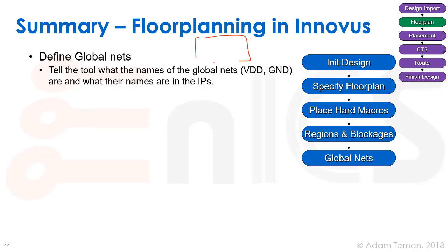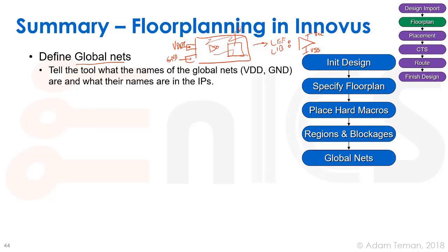Next, hard macros are placed using absolute or relative coordinates, with halos and blockages defined around them to preserve pin access. Basic placement regions and blockages are defined as needed, along with routing blockages. Then global nets are defined: for example, if the chip uses 'VDD' but an inverter cell internally calls it 'VCC', the global net mapping connects them. With multiple power domains — VDD1 and VDD2 — each cell's power pin maps to the correct domain via UPF or CPF.